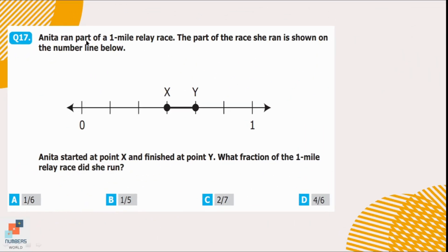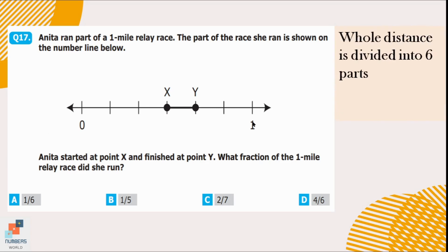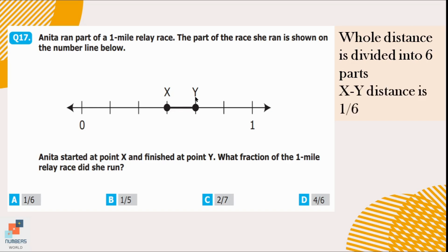Question number 17. Anita ran part of a one-mile relay race. The part she ran is shown on the number line. Anita started at point X and finished at point Y. What fraction of the one-mile relay race did she run? The whole distance is divided into 6 parts, and Anita ran only 1 part out of 6. So the distance from X to Y is 1/6 — option A.